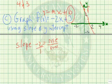And we write f of x equals negative 2x plus 3. And we did this one using the slope and y-intercept method.